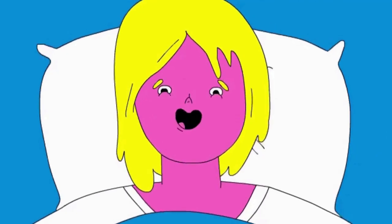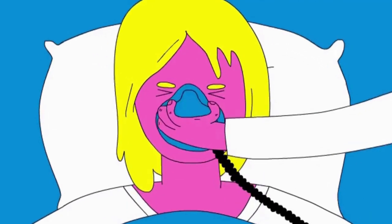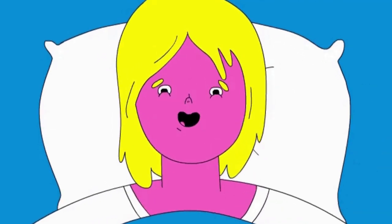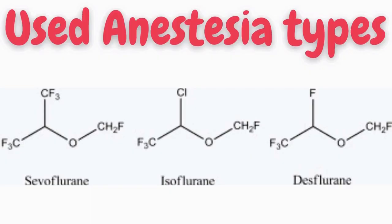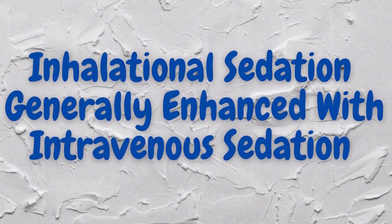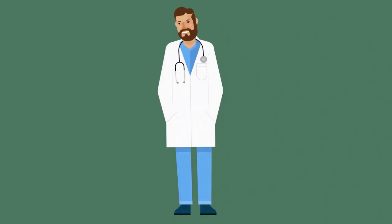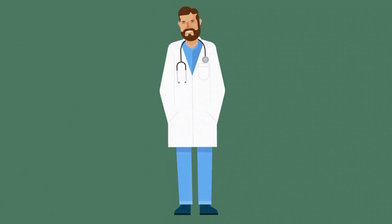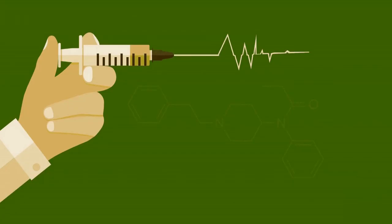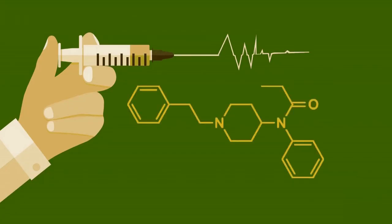Nitrous oxide became popular in the following decades and is still used today, though ether derivatives such as sevoflurane are more common. Inhalational sedation is generally enhanced with intravenous sedation, which was developed during the 1870s. Common intravenous agents include tranquilizers and narcotics similar to fentanyl, which reduce pain.